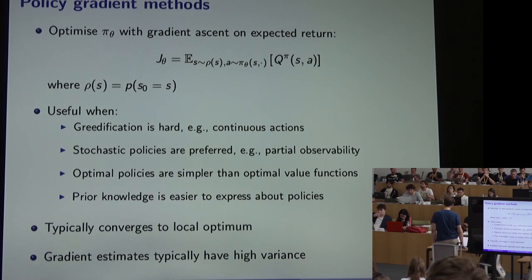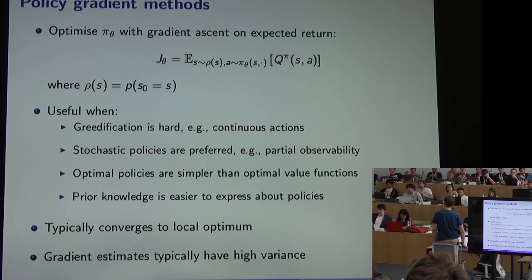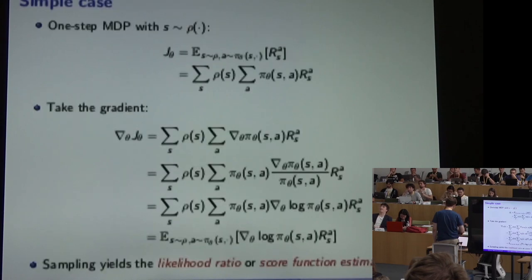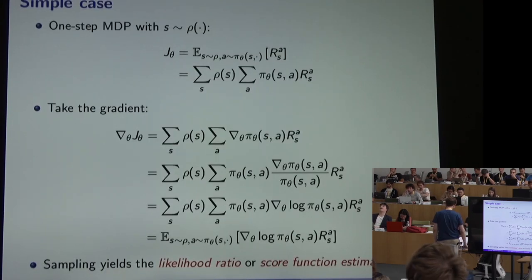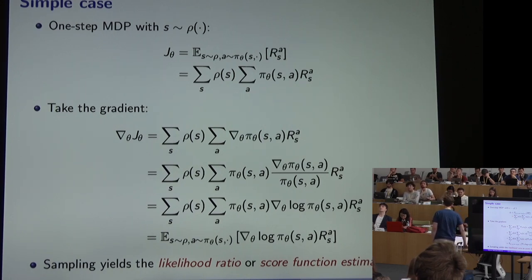These methods are useful in many settings, in particular when we have continuous actions and the greedification step required by a pure value function approach such as Q-learning or SARSA is itself a difficult optimization problem. We saw a simple derivation of the likelihood ratio or score function estimator, which gives us a way of estimating the gradient from one or more samples — we manipulate the gradient so it looks like an expectation, then estimate that expectation using samples.